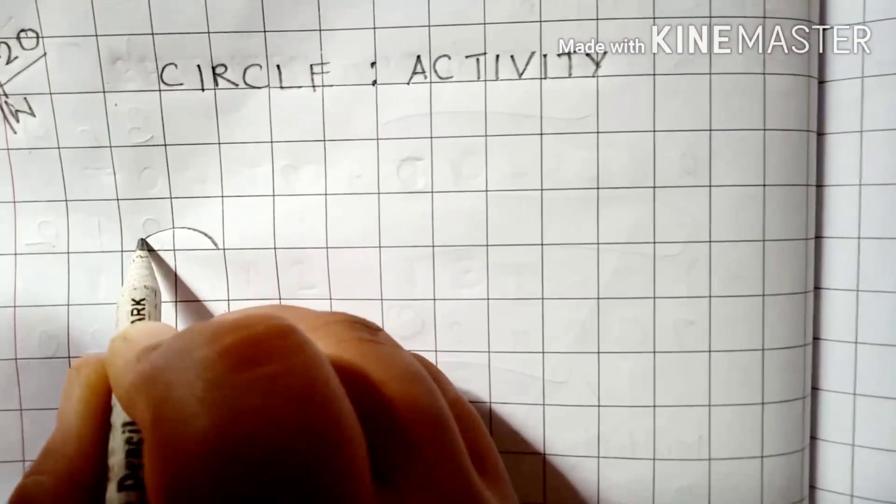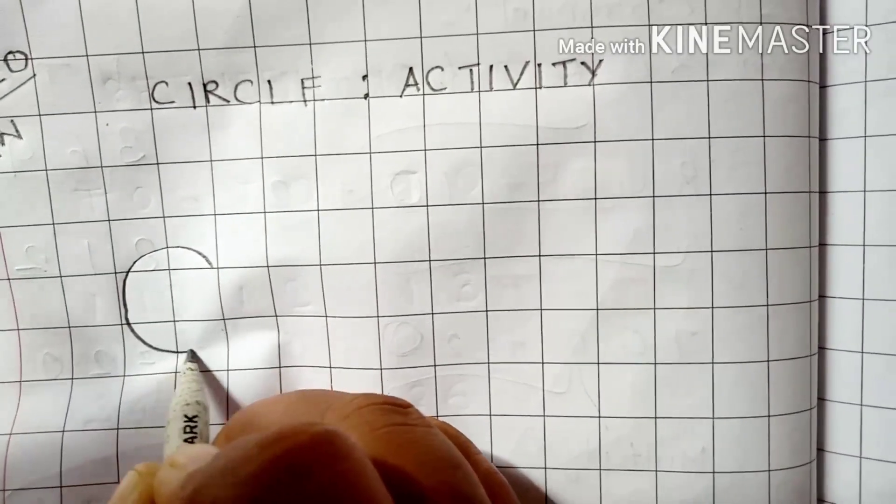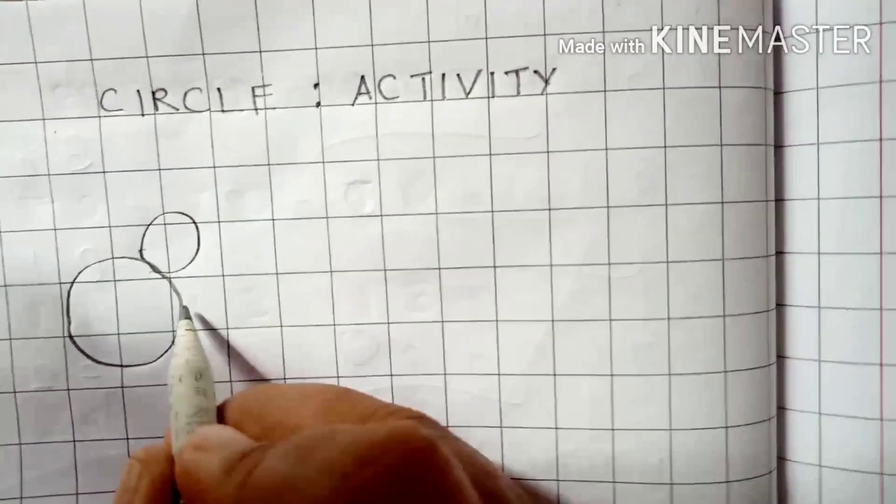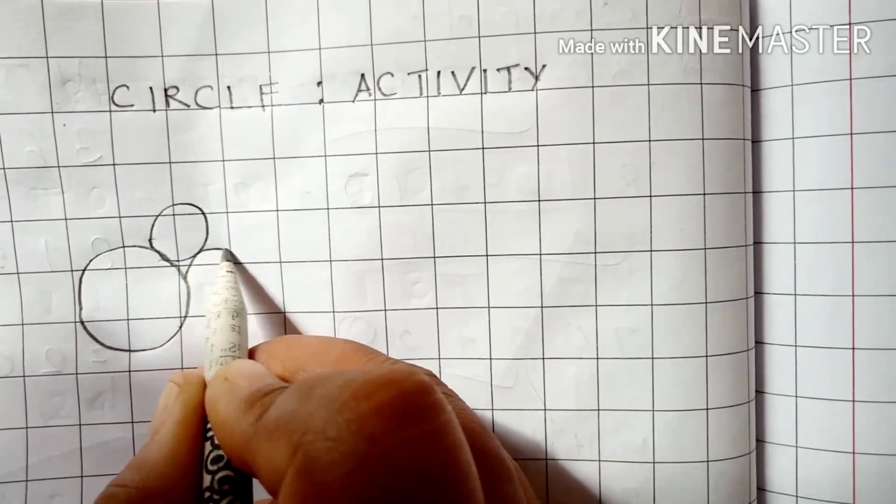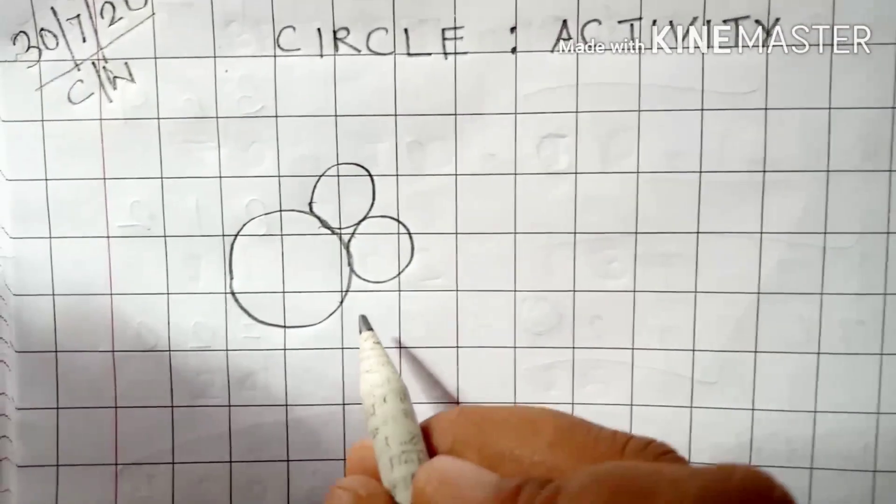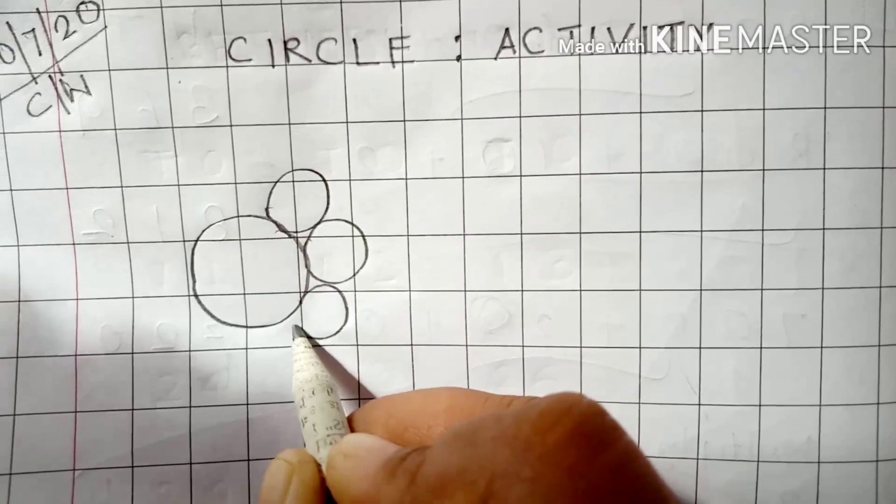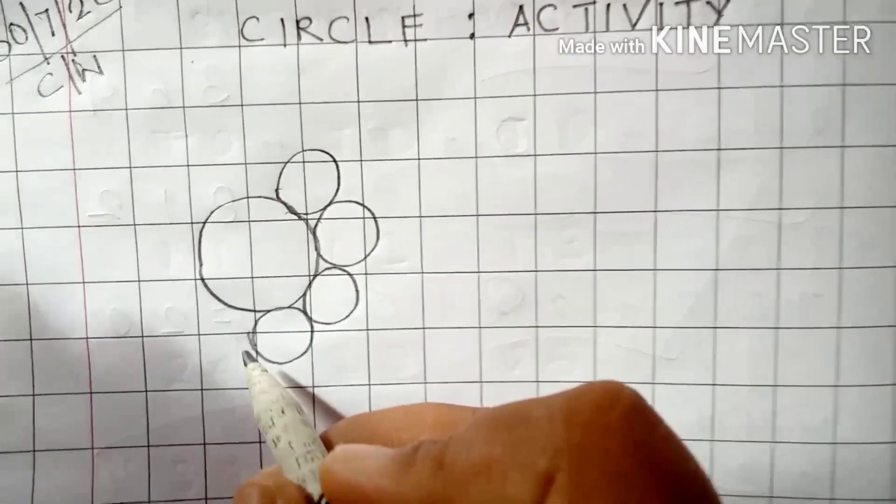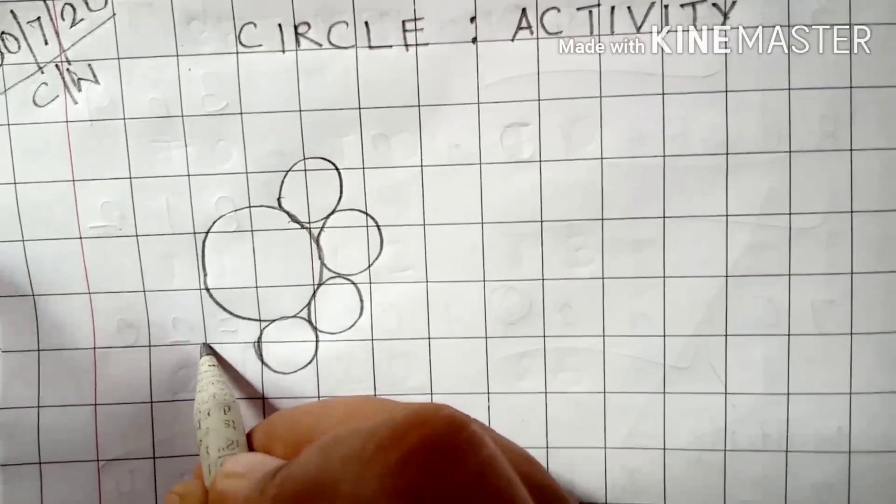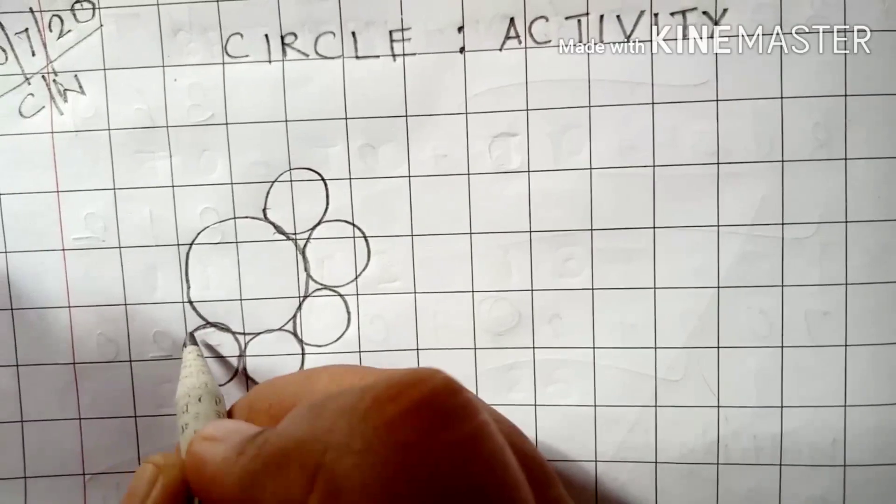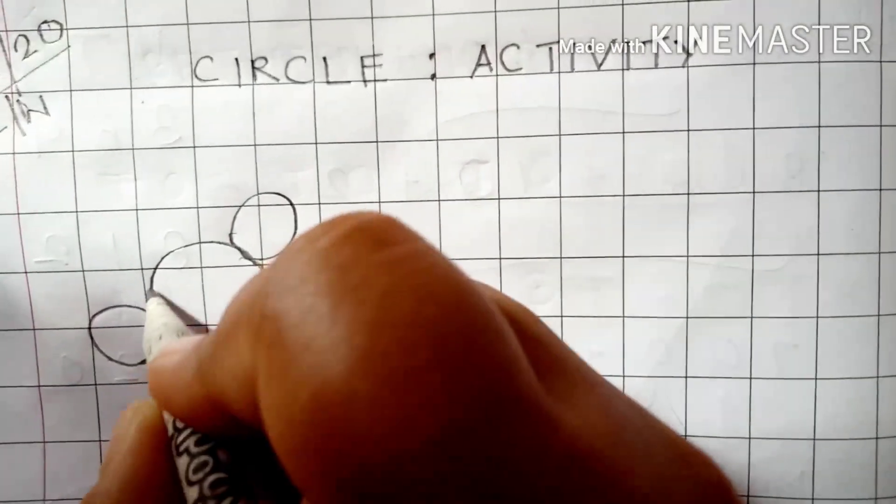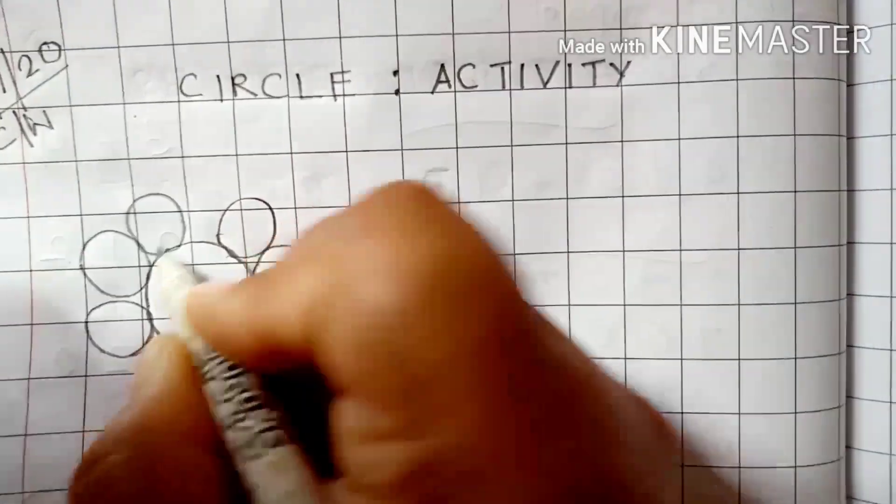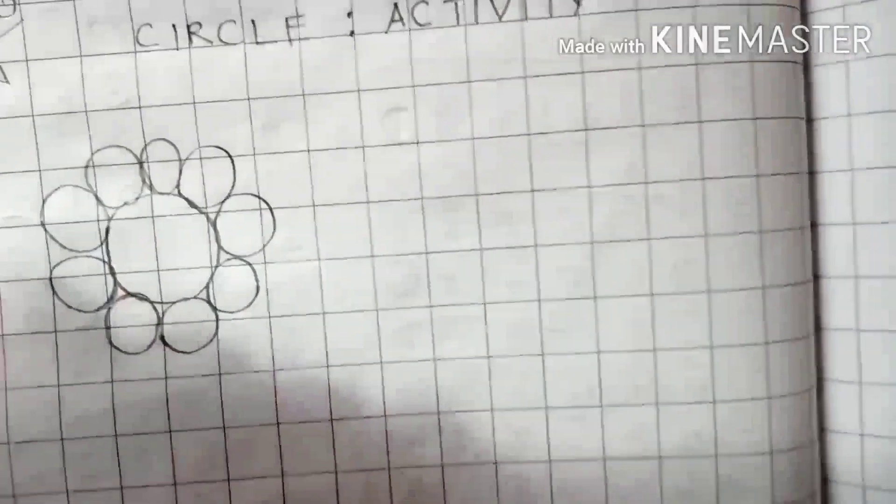So, first of all, you will draw a circle, like this. It's a big circle. Now, we will draw small, small circles. See, like this. I have drawn here, and this is the fifth number of circle. This is 6, 7, 8, 9. See, I have drawn 9 circles.